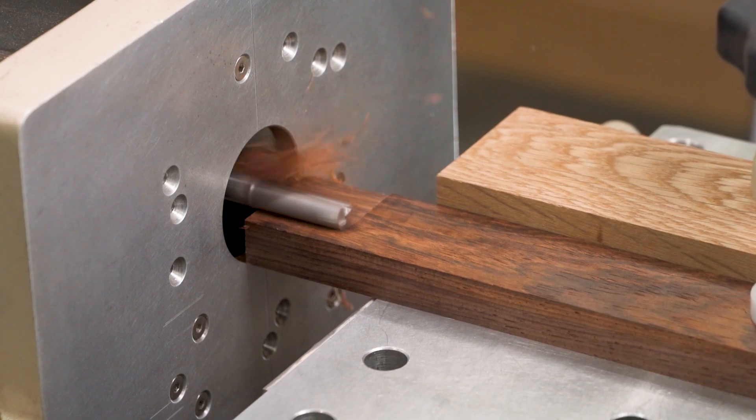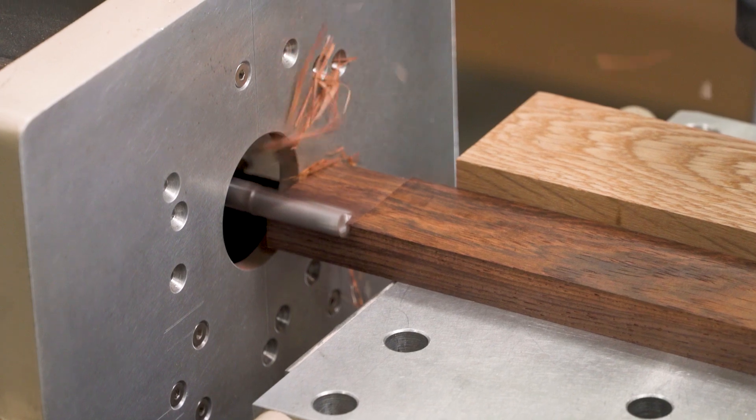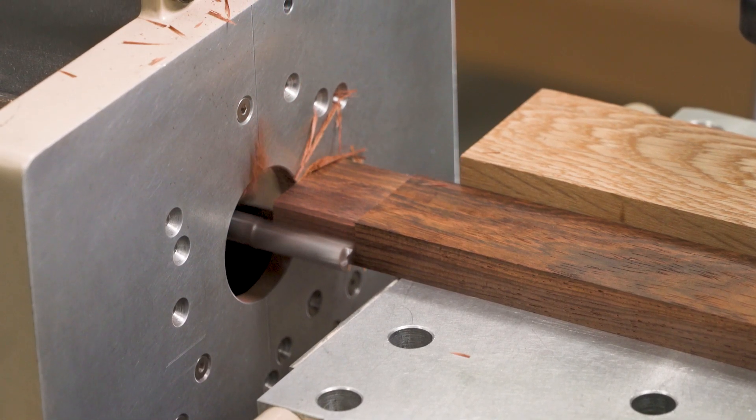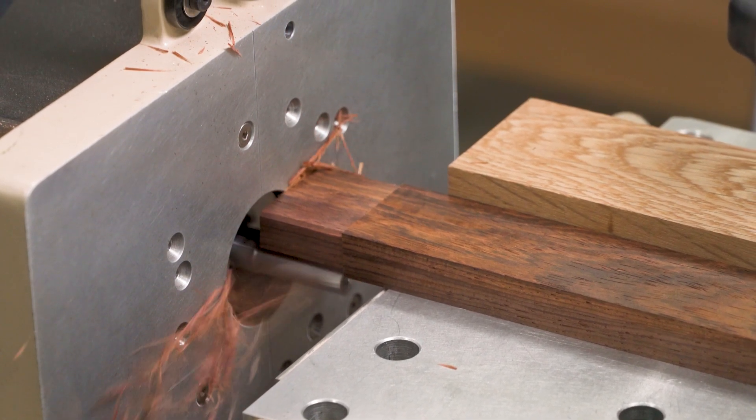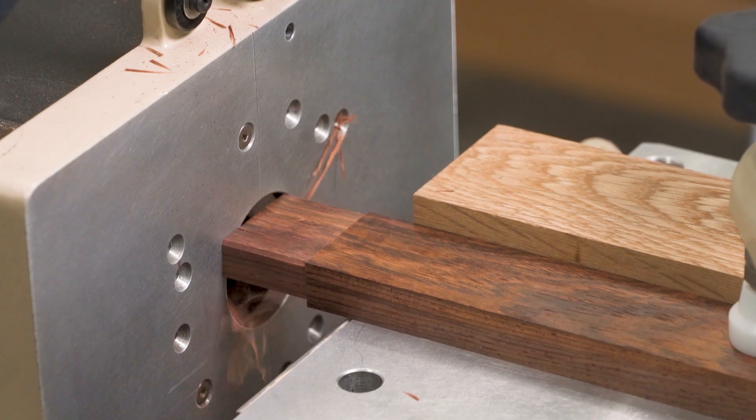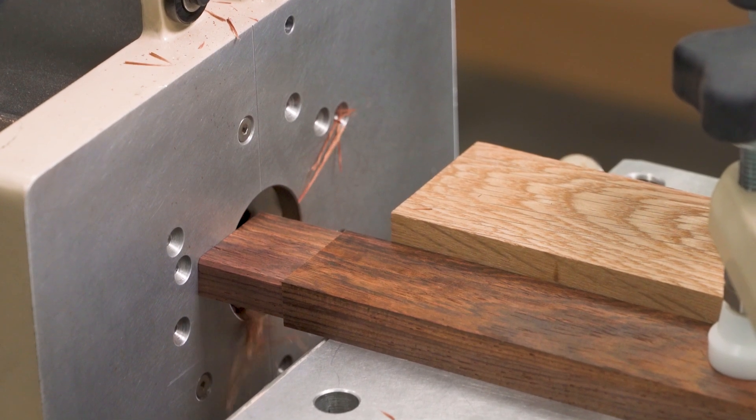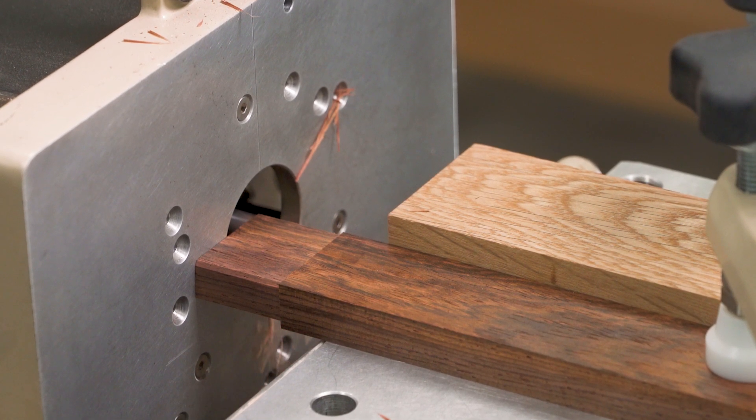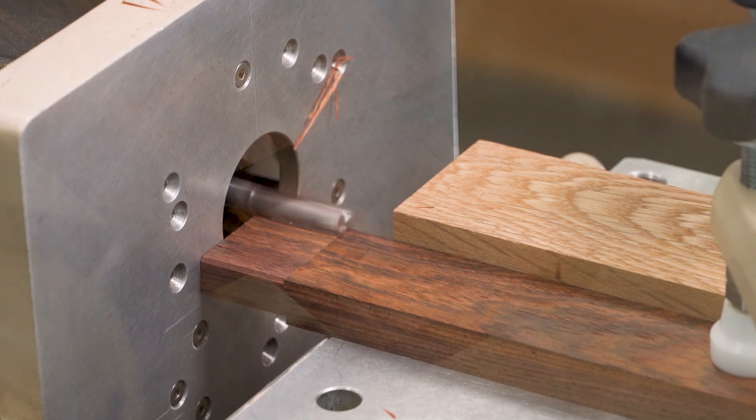Ultra-shear's solid carbide 3-flute slow spiral router bits deliver exceptional results in extremely dense materials like solid phenolic and other plastics, highly figured hardwoods, and tropical exotic hardwoods like this Patagonian rosewood.